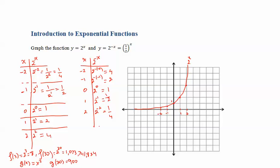If we plot these points — when x is 1 you get 1 half, when x is 2 you have 1 quarter — it's kind of like a reflection with respect to the y-axis. So plotting this, we have the graph of 2 to the negative x.